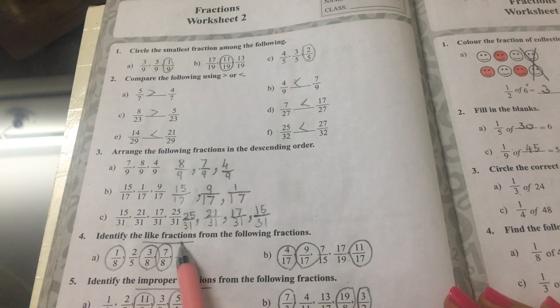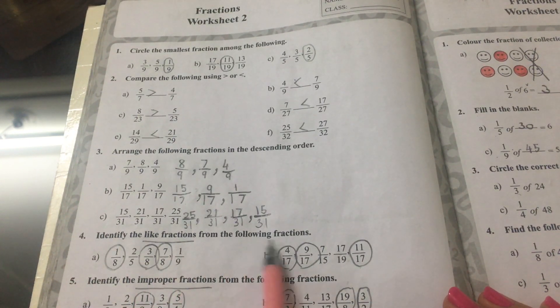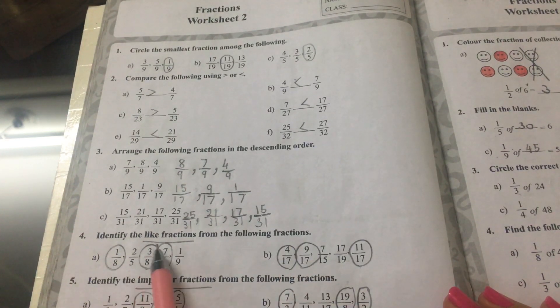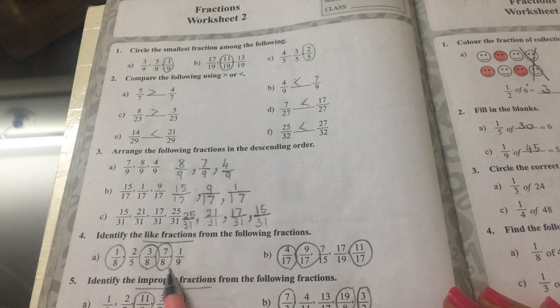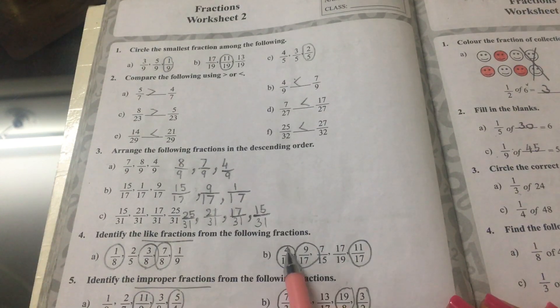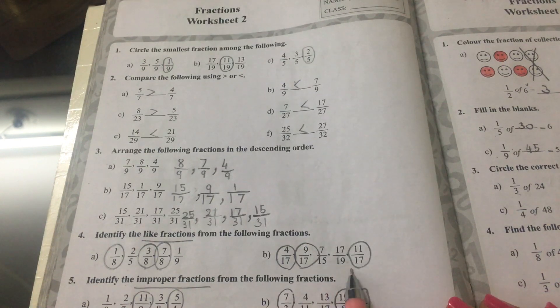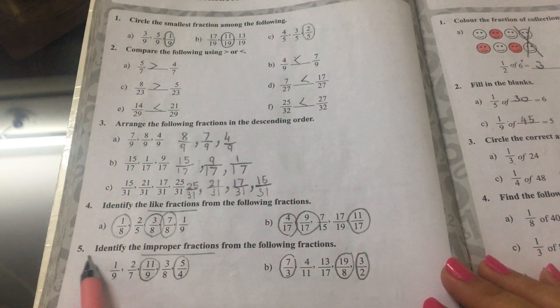Question 4. Identify the like fractions from the following fractions. A is 1 eighth, 3 eighths, 5 eighths, and B is 4 seventeenths, 9 seventeenths, and 11 seventeenths.